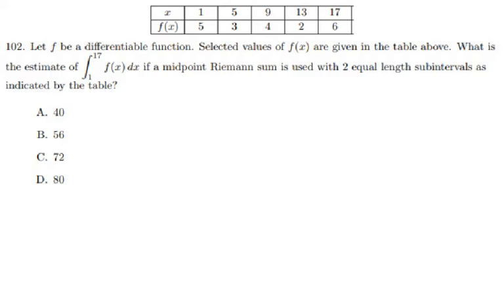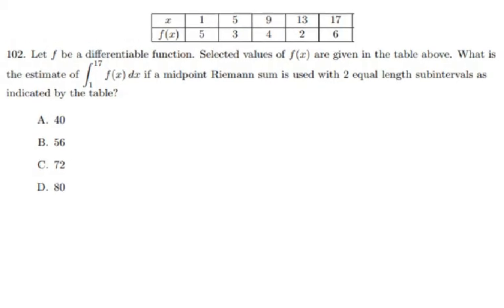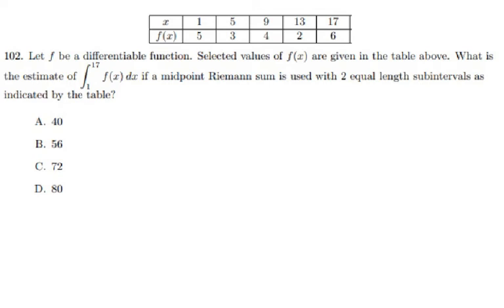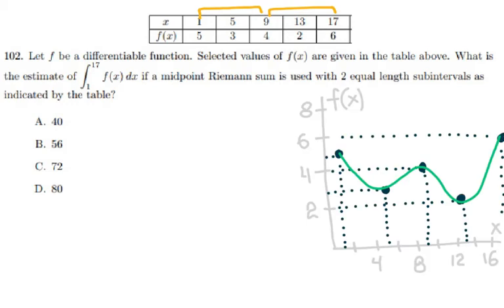So if we use this table to split it into two equal parts, we would have between 1 and 9 and between 9 and 17. I'm going to draw the graph to give the explanation, and then we can use just the graph itself.